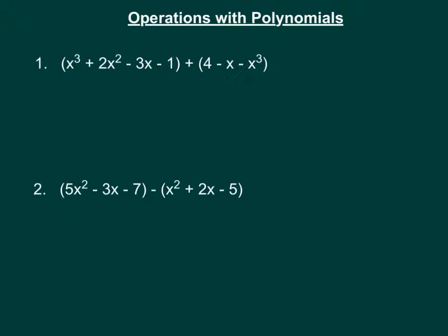Today we're going to talk about operations with polynomials. In example 1, all they're asking us to do is find the sum of a polynomial with 4 terms and a trinomial, which has 3 terms. What we really have to do is just combine our like terms — we're looking for similar exponents.